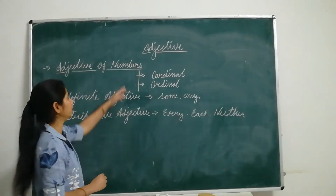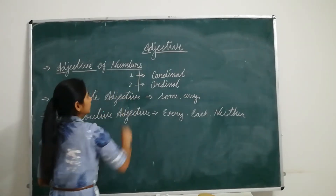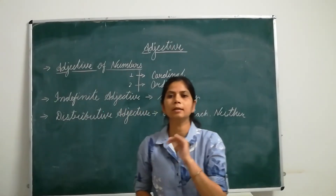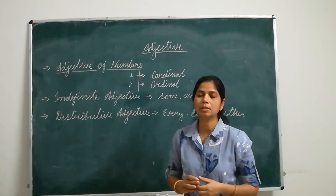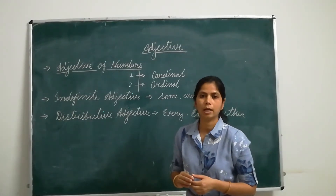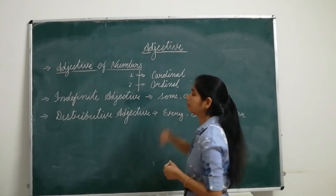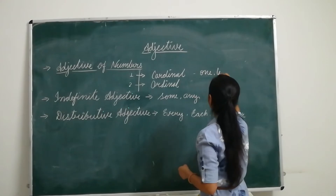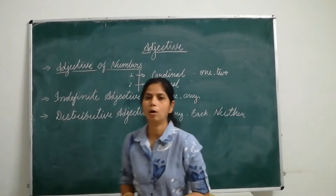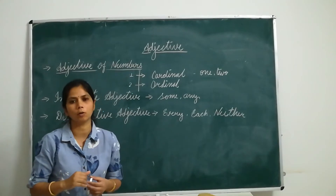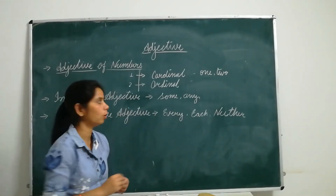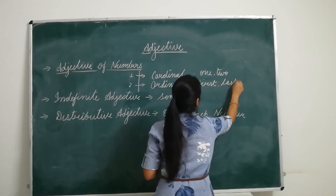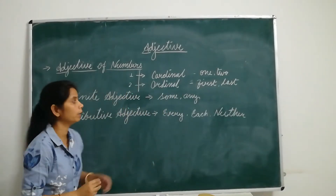Now we will study some more kinds. When we discuss about adjectives of numbers, number adjectives are divided into two parts: first is cardinal and second is ordinal. As you know in mathematics also, numbers are of two types — cardinal number and ordinal number. These numbers can be used with nouns to tell about the number of the noun. Cardinal numbers are one, two, three, four — these are cardinal numbers. Ordinal numbers tell about the position of the noun — words like first, second, third, last — these are ordinal numbers.